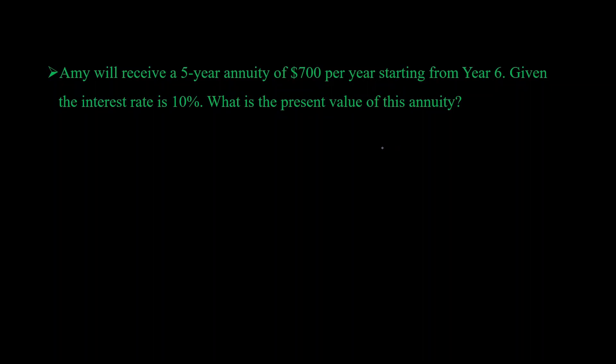People often make mistakes with periods while figuring out present values of delayed annuities. Let's look at this example. Amy will receive a five-year annuity of $700 per year starting from year 6. The interest rate is 10%, and we need to figure out the present value of this annuity.